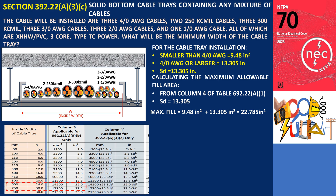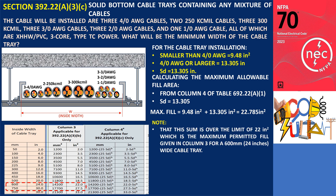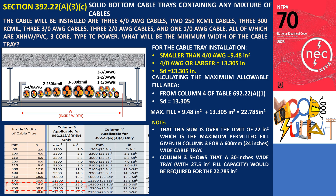Note that this sum is over the limit of 22 square inches, which is the maximum permitted fill given in Column 3 for a 24-inch wide cable tray. Column 3 shows that a 30-inch wide tray, with 27.5 square inches fill capacity, would be required for the 22.785 square inches determined from the calculation of Column 4, Table 392.22(A)(1). Therefore, to accommodate this fill, a 30-inch wide cable tray should be used.